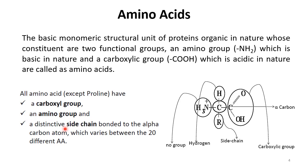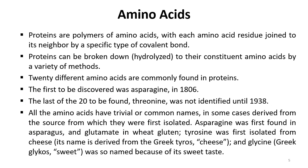All amino acids — except proline — have a carboxyl group, an amino group, and a distinctive side chain bonded to the alpha carbon atom, which varies among the 20 different amino acids. By varying this R group we get a range of amino acids. Proteins are basically polymers of amino acids with each amino acid residue joined to its neighbour by a specific type of covalent bond.